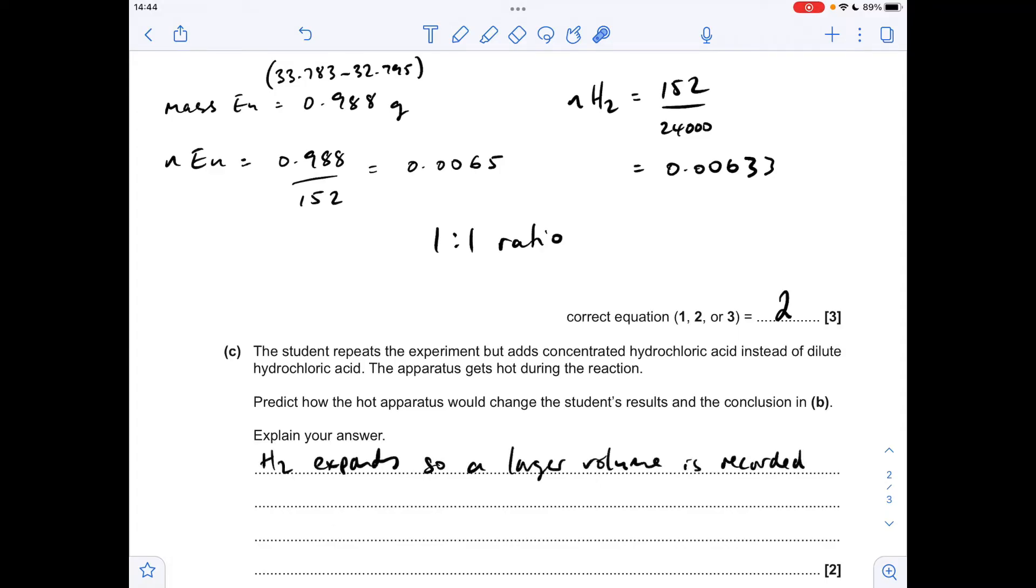So when we calculate the moles of hydrogen we're going to have a higher number in the numerator term of this fraction so we're going to get a greater number of moles of hydrogen calculated. Now the student still used the same mass of europium so the ratio between the europium and hydrogen is going to increase.